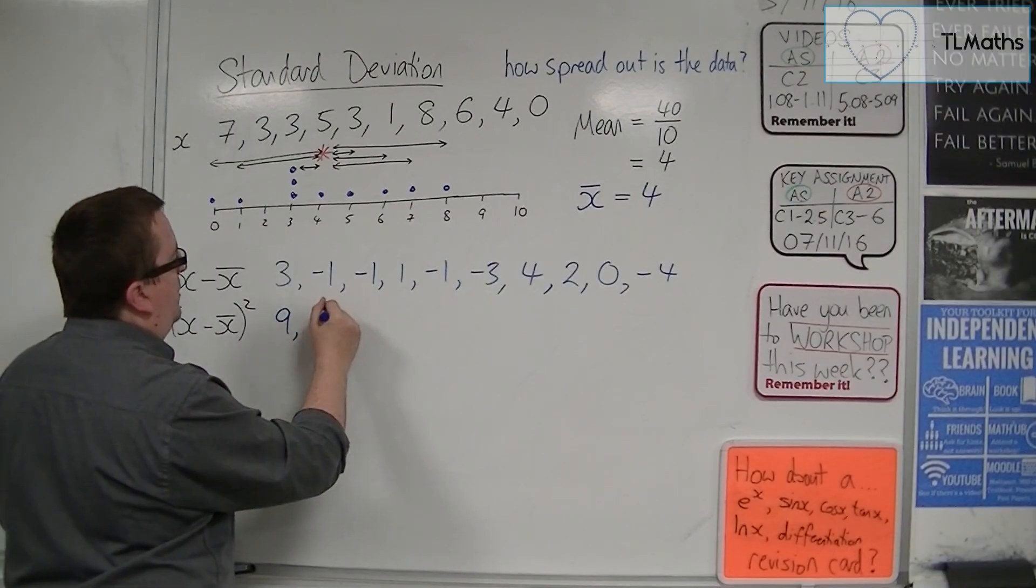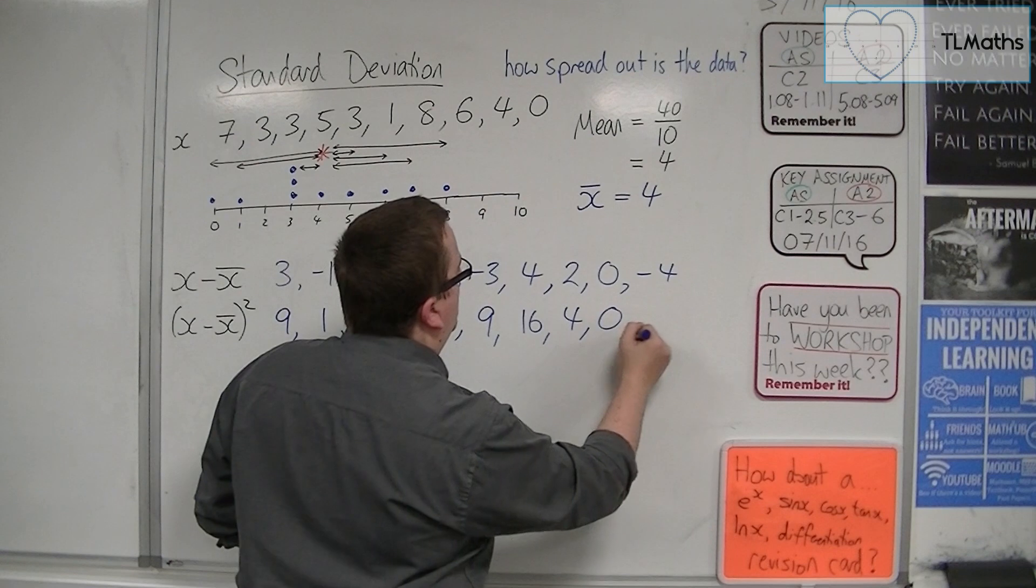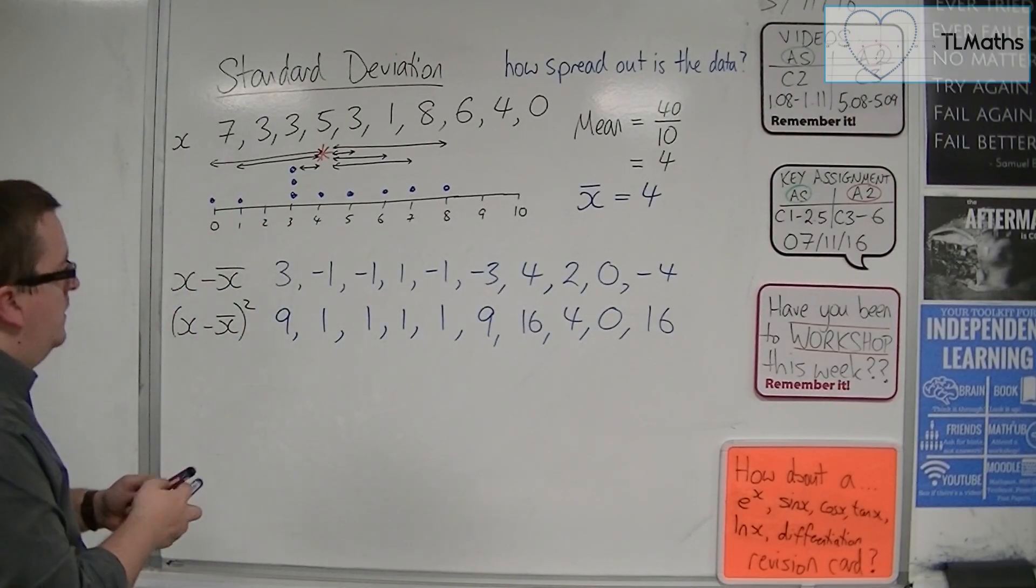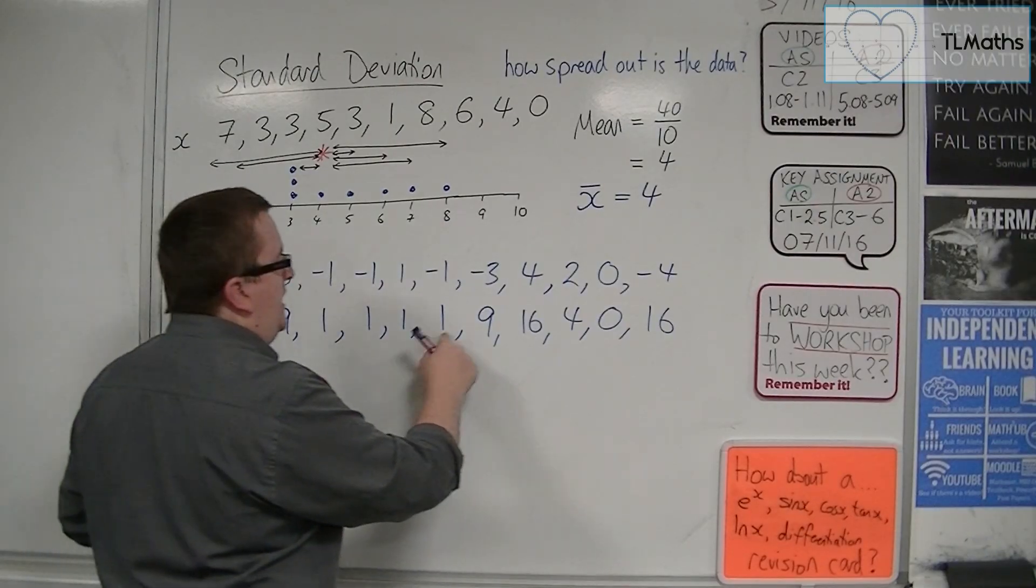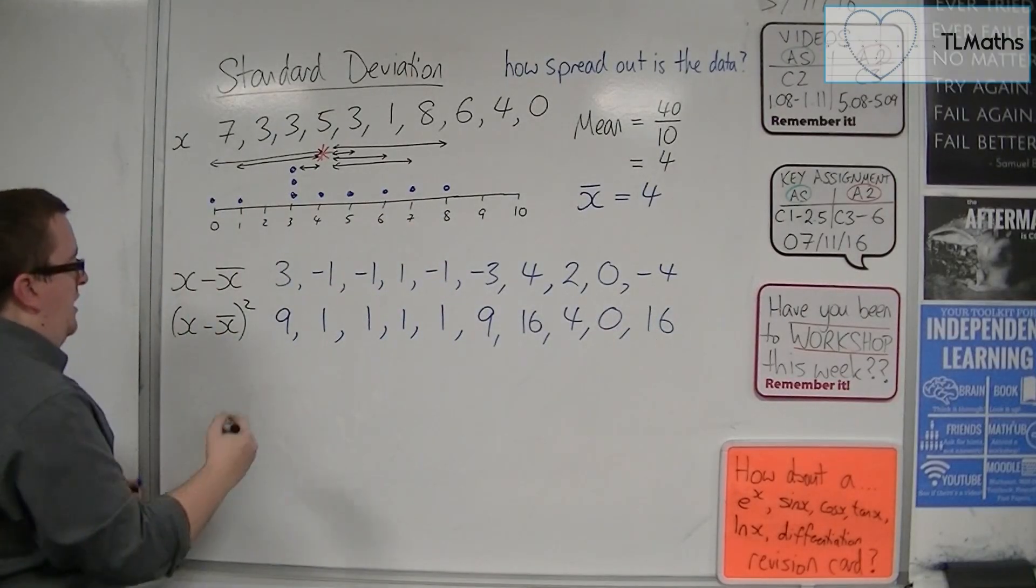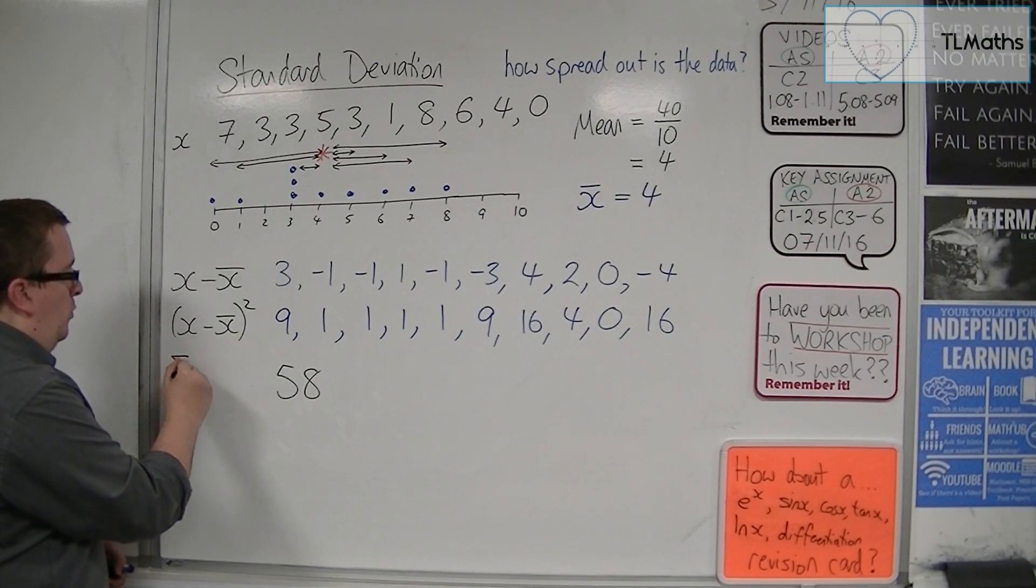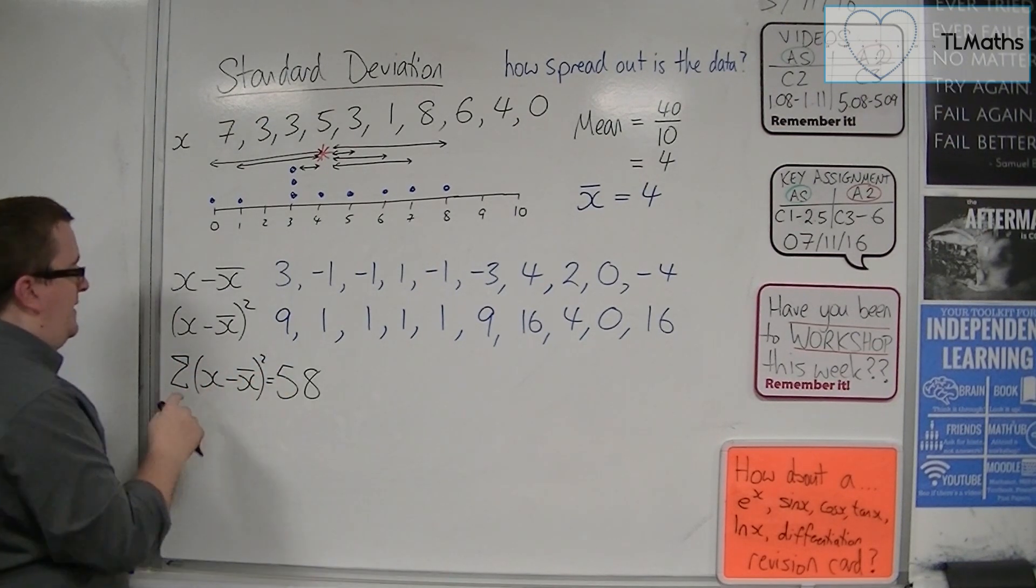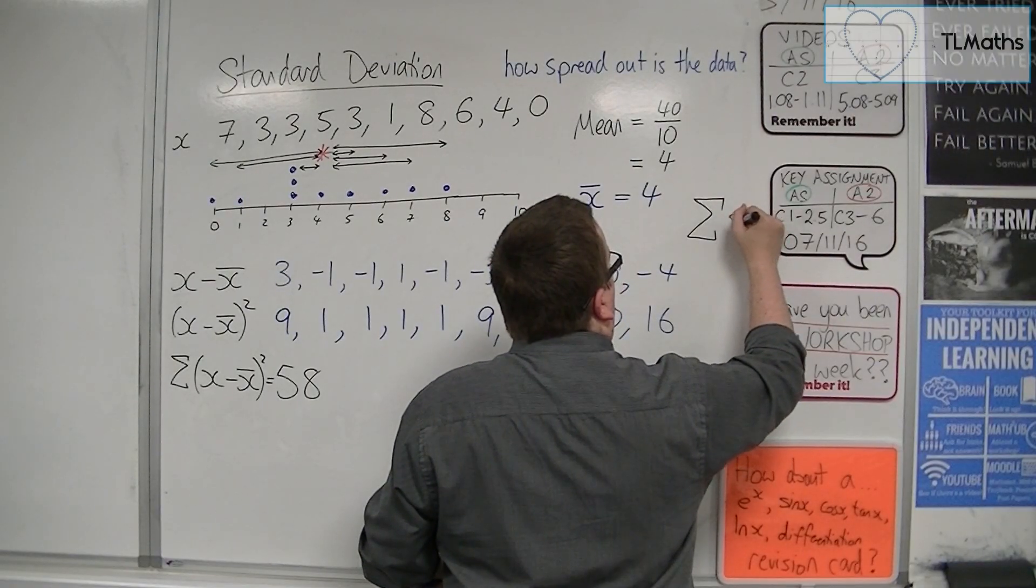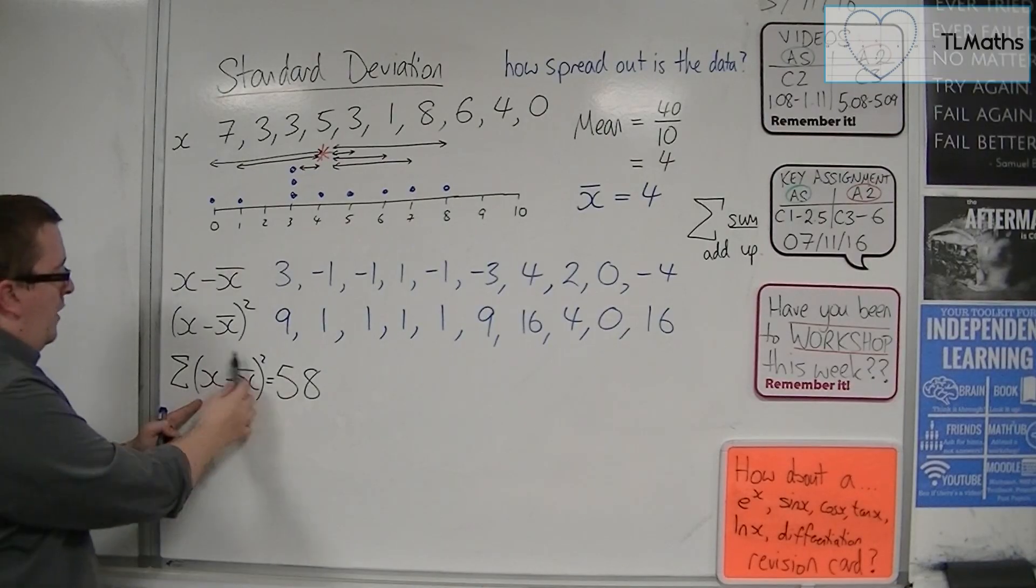So, if I square each of them, I'm now getting this x minus x bar all squared. 3 squared is 9. Minus 1 squared is 1. Then I have 1, then 1, then 1. Minus 3 squared is 9. 4 squared is 16. 2 squared is 4. 0 squared is 0. Minus 4 squared is 16. Right. So, what is that equal to if I add them all up? Okay, so I've got 9, 10, 11, 12, 13, 22, 38, 42, 48, 58. So, 58 is the total.